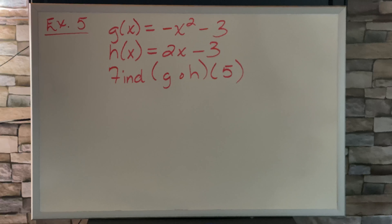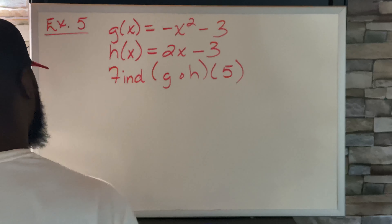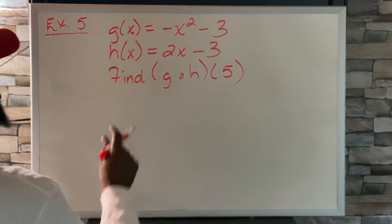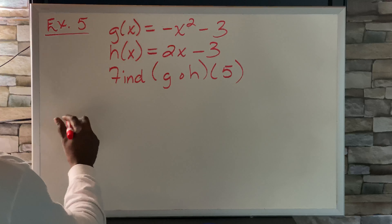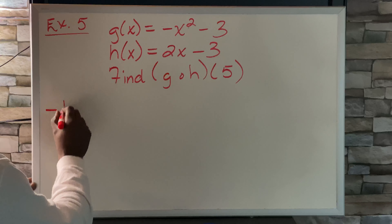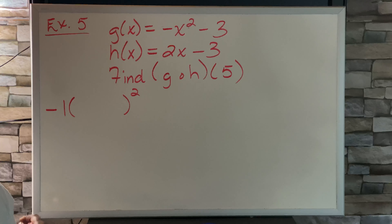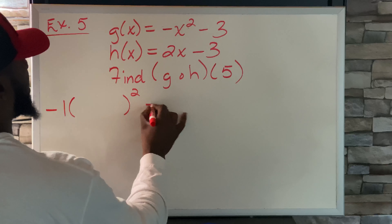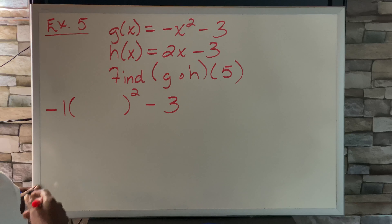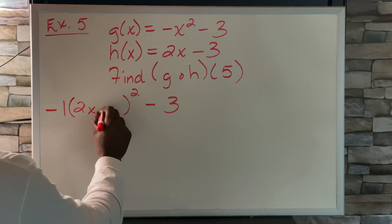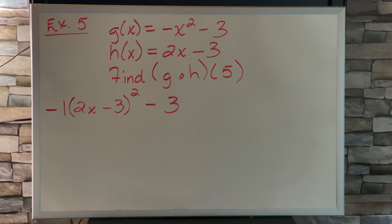Example 5: g of x equals negative x squared minus 3, and h of x equals 2x minus 3. Find g of h of 5. G is the base, so we write negative 1 times parenthesis, squared, minus 3. What goes inside is h: 2x minus 3.